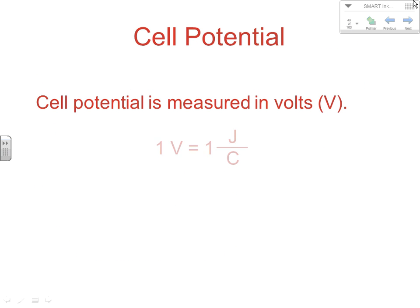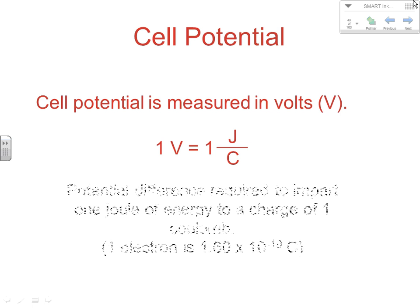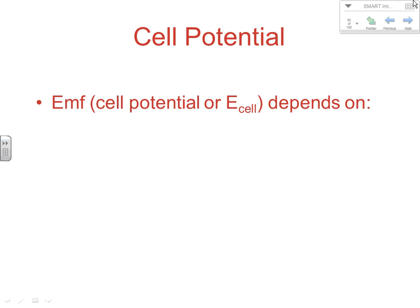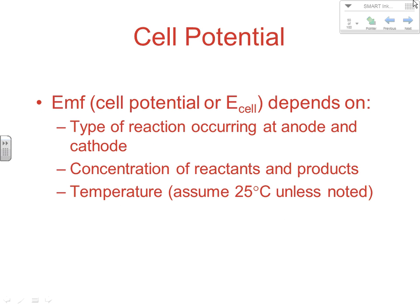Cell potential is measured in volts, and one volt is one joule per coulomb — the potential difference required to impart one joule of energy to a charge of one coulomb. One electron is 1.6 × 10⁻¹⁹ coulombs, so when you're looking at one coulomb of charge, that's a significant number of electrons. A volt is the potential difference needed to impart one joule of energy to a charge of one coulomb, and that's the unit we use when measuring EMFs or cell potentials.